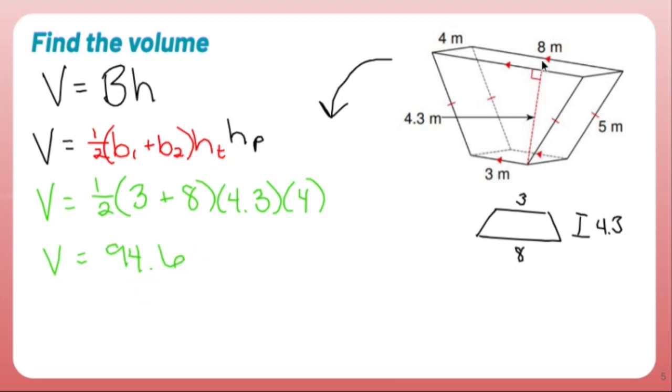Now this is volume and the units are meters, so I'm going to make sure that I say meters cubed because it's volume. And you find the volume of a trapezoidal prism by using this formula, or you could just jump straight to that formula, whatever floats your boat. But that's what I got for this one, 94.6 meters cubed.